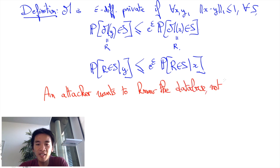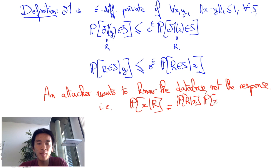This means that the quantity an attacker is actually interested in is the quantities like the probability of x given R, using the probability of R given x as follows. The probability of x given R is equal to the probability of R given x times the probability of x divided by the probability of R, where the probability of x is the prior belief of the attacker on what the database may contain.